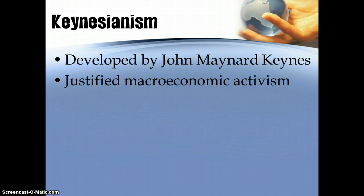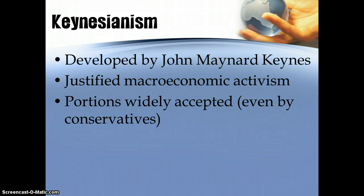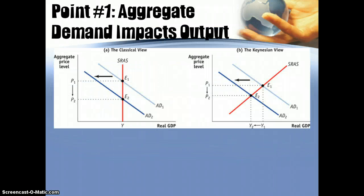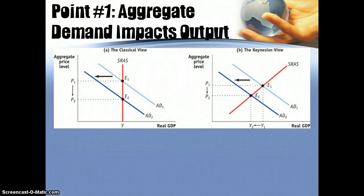In it, Keynes is arguing for an activist macroeconomic policy — that there is a role for the government in macroeconomics, and that it's not just going to raise prices but will actually have a positive effect, particularly on output. A lot of his ideas are still generally accepted and used today. Conservatives and liberals on both sides, to a certain extent, understand and accept parts of Keynes' theory. One key point is that aggregate demand can impact actual output.